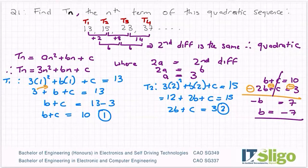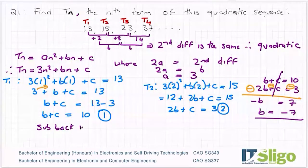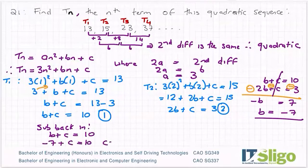So I'm going to sub back in to either equation. I'm going to do b plus c being equal to 10 because it's nice and easy. So minus 7 plus c is equal to 10, or c is equal to 10 plus 7, c is equal to 17. Feels like I've made a mistake here, but anyway, that wouldn't be anything new for me.